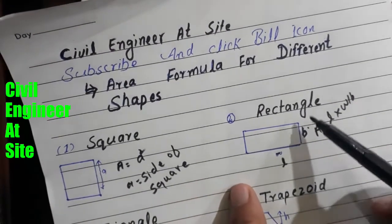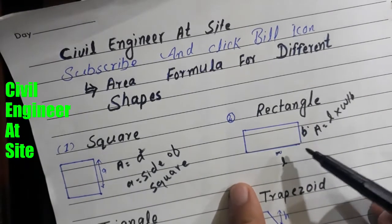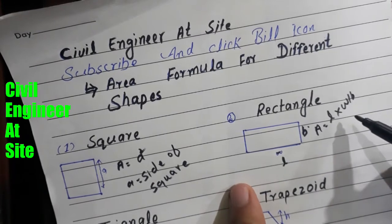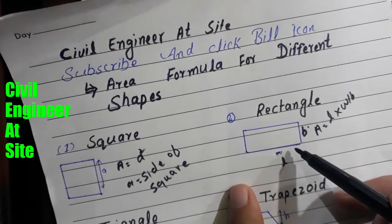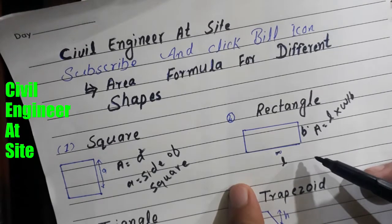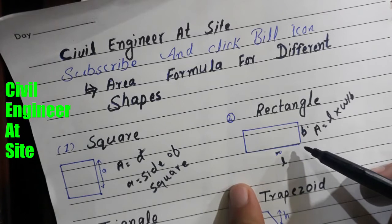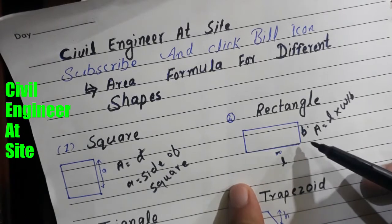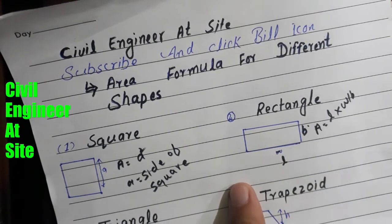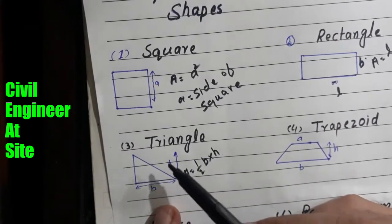The second shape is the rectangle. The formula for the rectangle is length multiplied by breadth, or width. This is the length of the rectangle and this is the breadth or width. When we put the values of length and breadth into this formula, it will give the area of the rectangle.